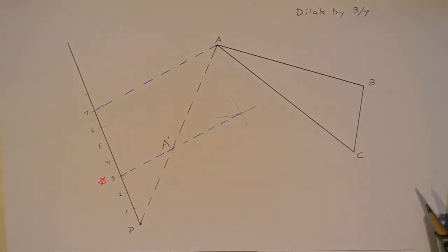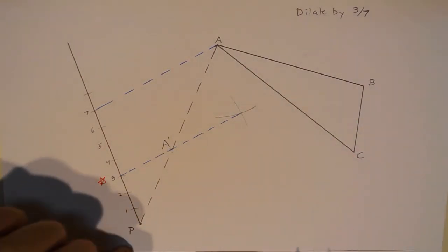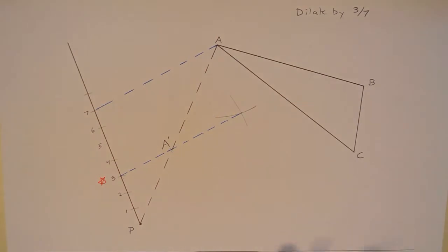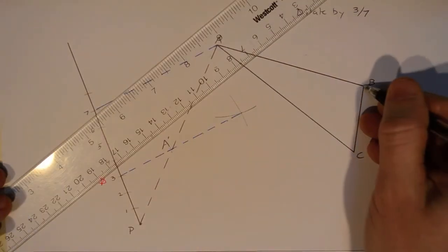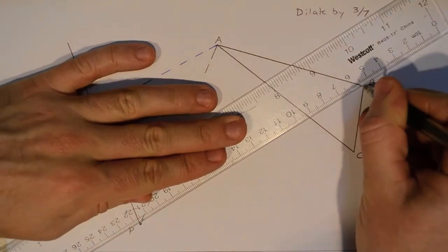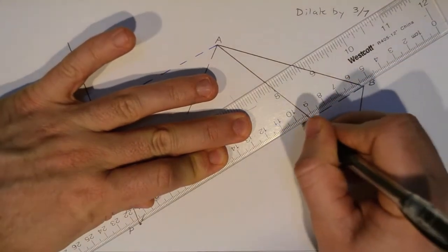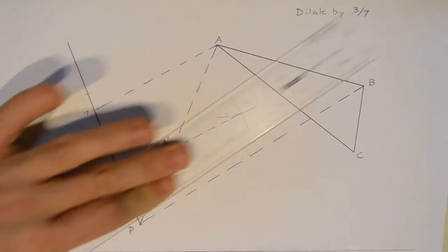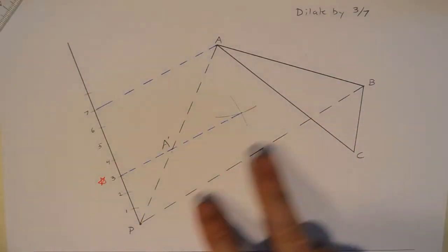For the next two points, B and C, I'm going to do very much the same thing, except I won't have to work quite as hard. I don't need to recreate this line segment and notch off all these little pieces on it, because I know something about where they're going to be from point A prime. Now I'll start by connecting P to B, because I know B prime is going to live somewhere along this line, P, B.